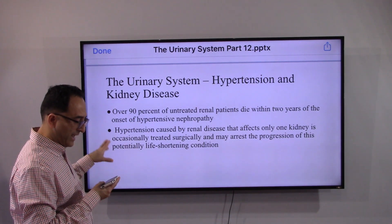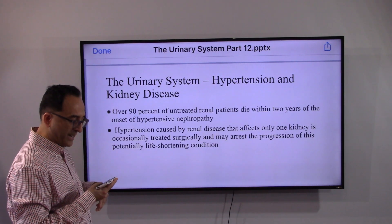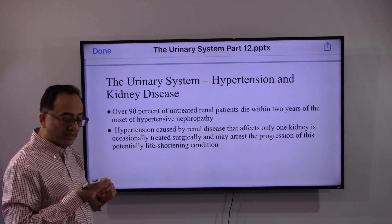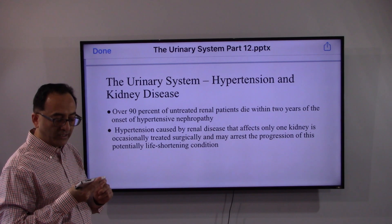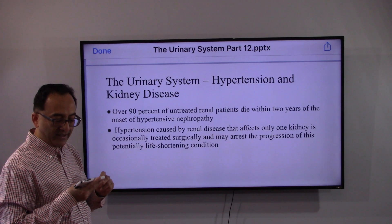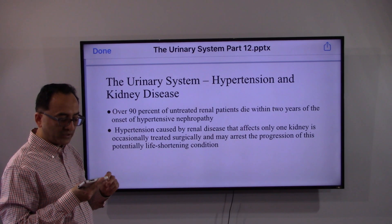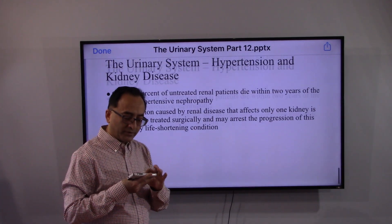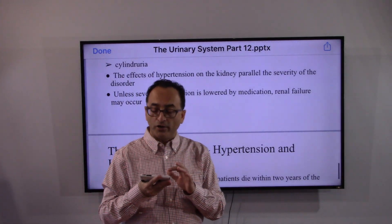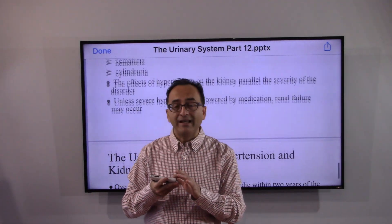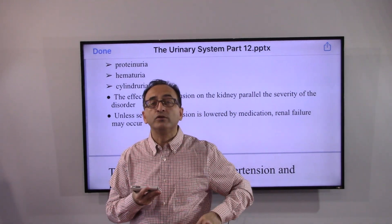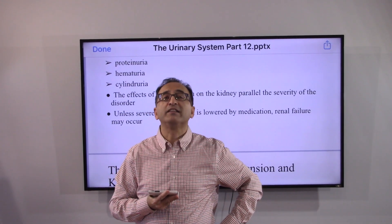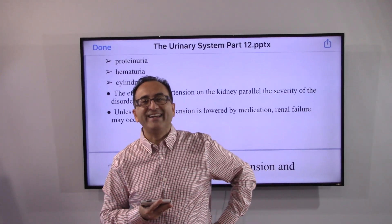Hypertension caused by urinary disease affecting only one kidney is occasionally treated surgically, which may halt the progression of this potentially life-threatening condition. That concludes this video; another aspect of the urinary system will be covered soon.